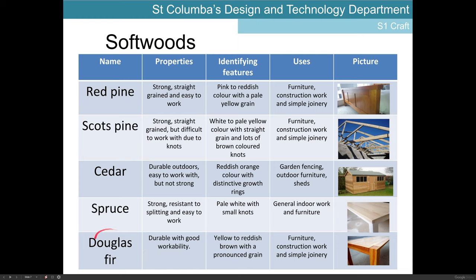Finally, we have Douglas fir — a durable softwood with good workability and easy to work with. It has a very pronounced grain and is yellow to red to brown in colour. The grain tends to stand out against the rest of the timber, which adds to the aesthetic appeal, and because of that it's commonly used in furniture.